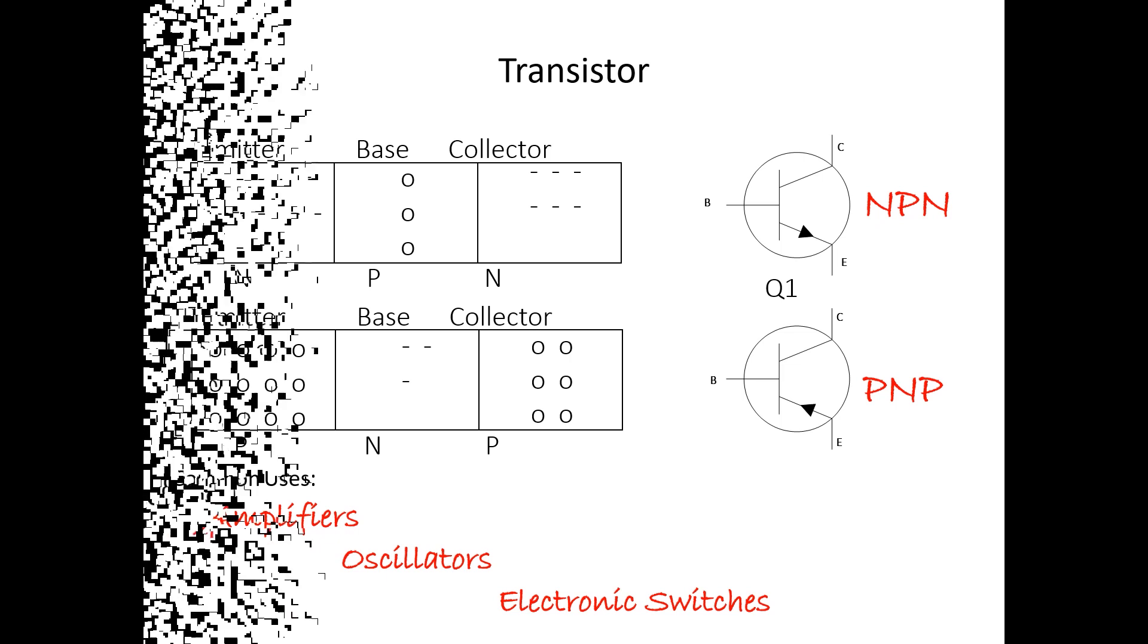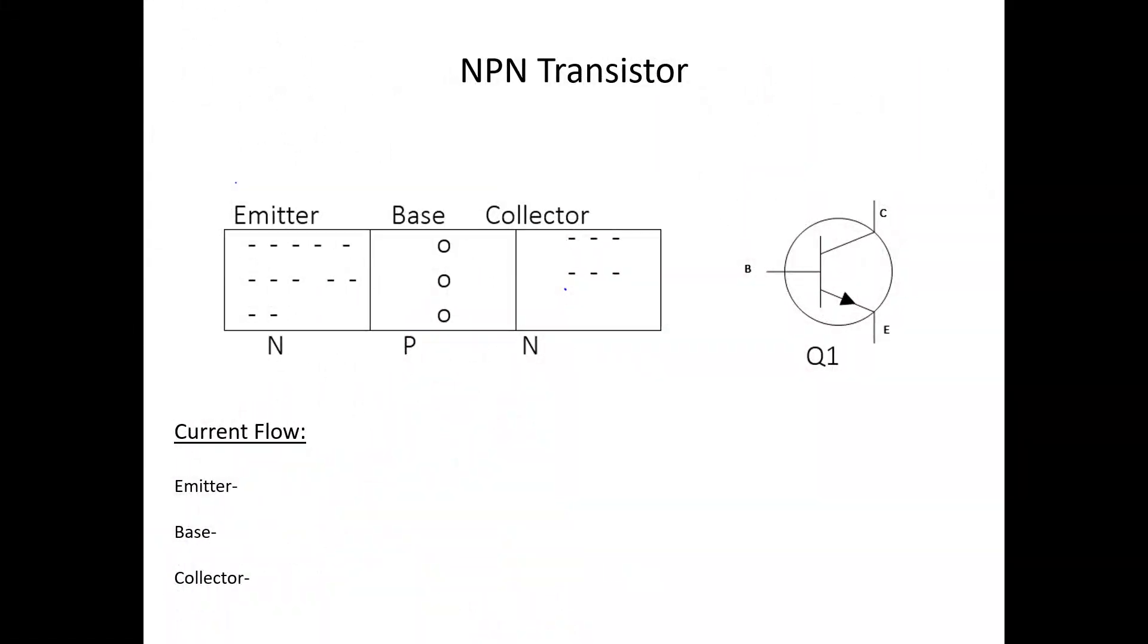Now let's move on specifically to the NPN transistor. The NPN transistor can be easily identified by its schematic trait of an arrow that's not pointing in. Pro tip. Each transistor consists of three terminals: an emitter, a base, and a collector.